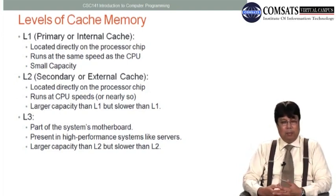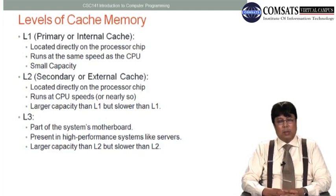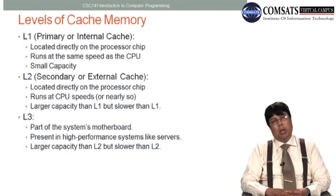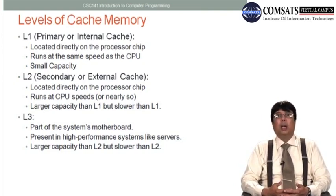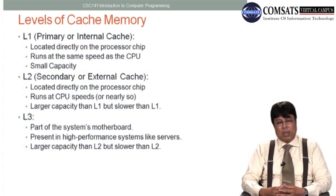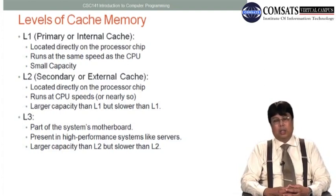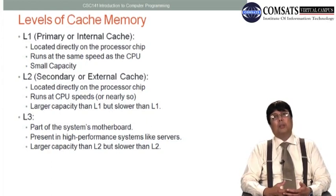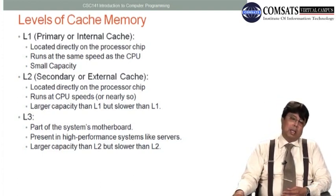L3 cache memory is part of the system's motherboard, with a faster bus providing a faster data path from the CPU to memory. This L3 cache is present in high-performance systems like servers. It has a larger capacity than L2 and L1 cache, but its speed is slightly slower than L2 cache.